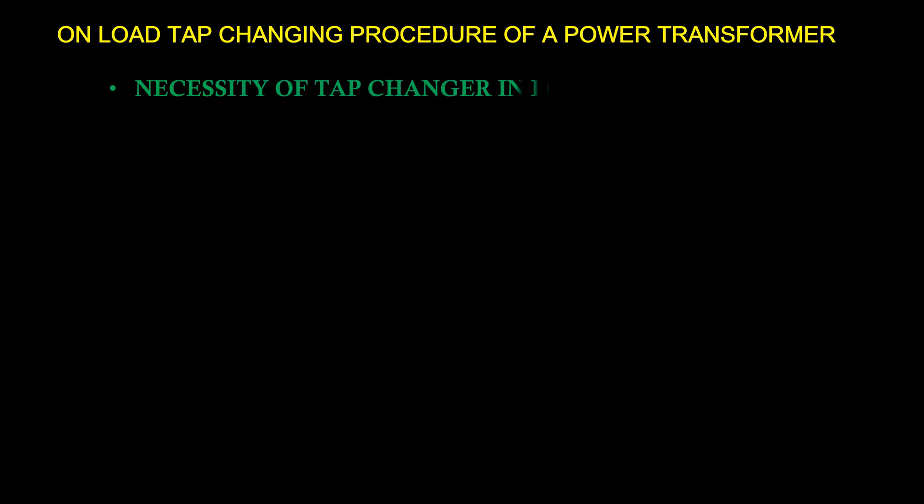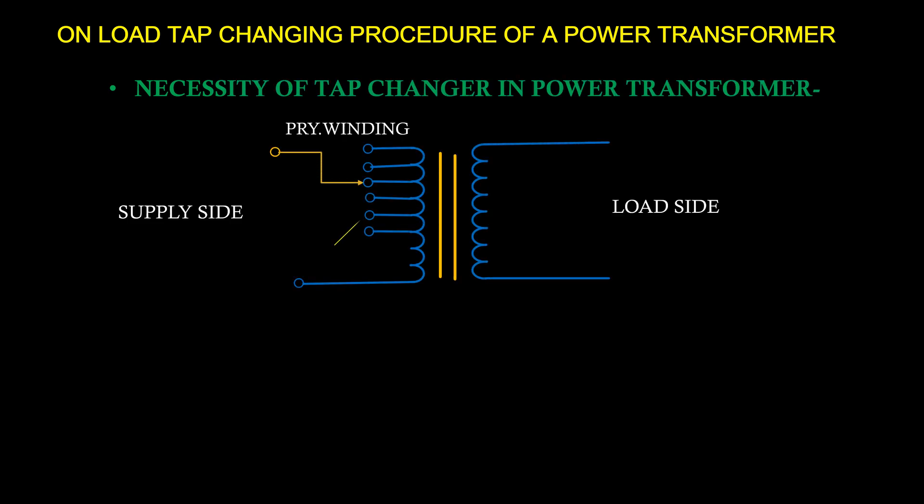Necessity of tap changing in power transformer. When a transformer is connected to a system, it is necessary that arrangement be provided to maintain normal voltage at the secondary load side under load conditions.